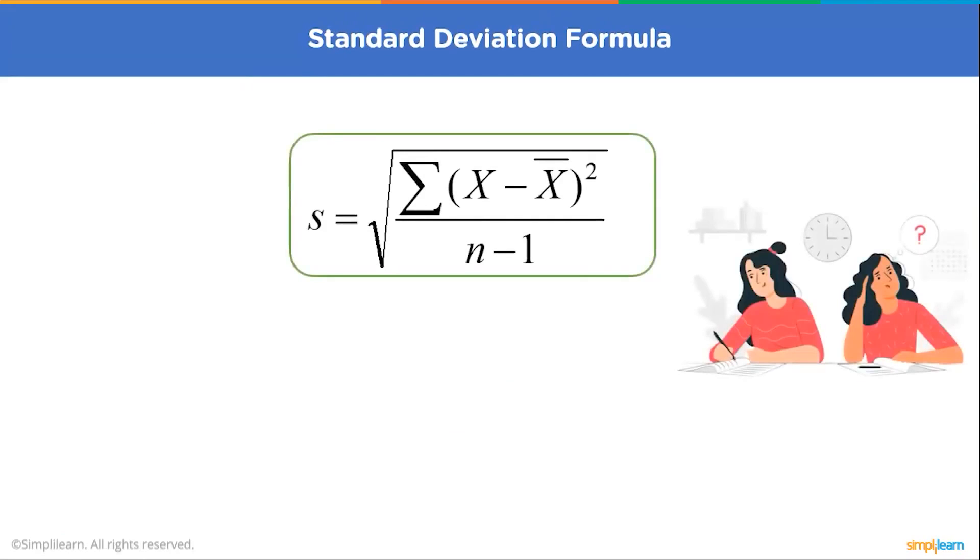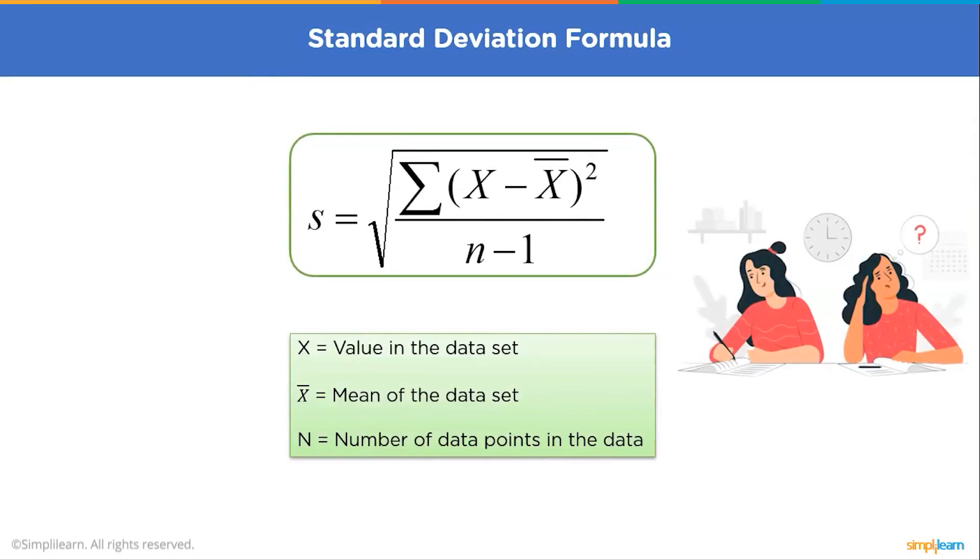So now that we know what is the standard deviation, let's see how we can calculate the standard deviation. So to calculate the standard deviation, we have this formula. It is the square root of x minus x bar whole square divided by n minus 1, where x is the value in the data set, x bar is the mean of the data set, and n is the number of data points in the data.